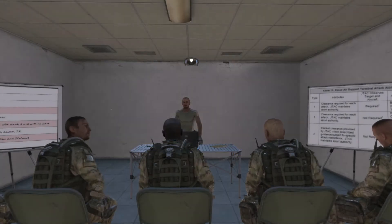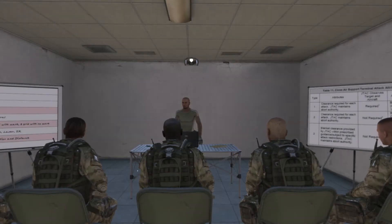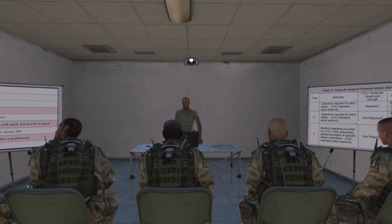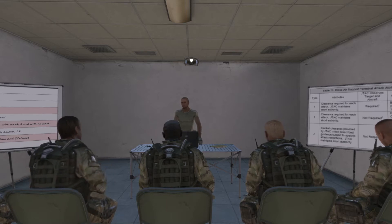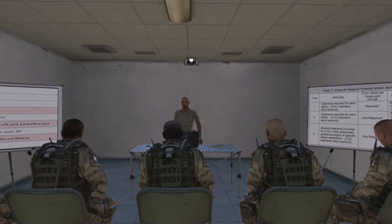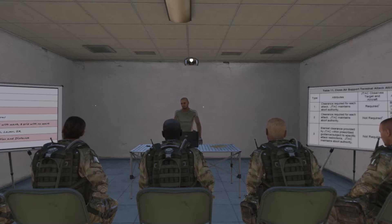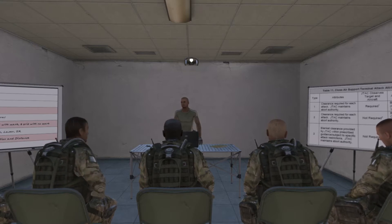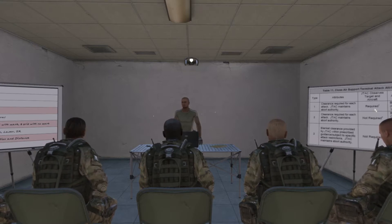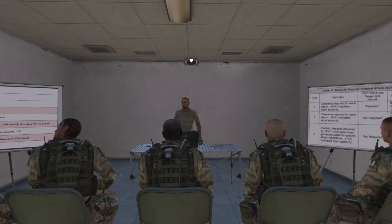Next we will cover the CAS 9-line and 5-line brief. The 9-line is the standard CAS brief for fixed wing aircraft. The 5-line is the standard CAS brief for rotary wing aircraft. They are both used to quickly and accurately pass information about a CAS mission between the JTAC and pilot.